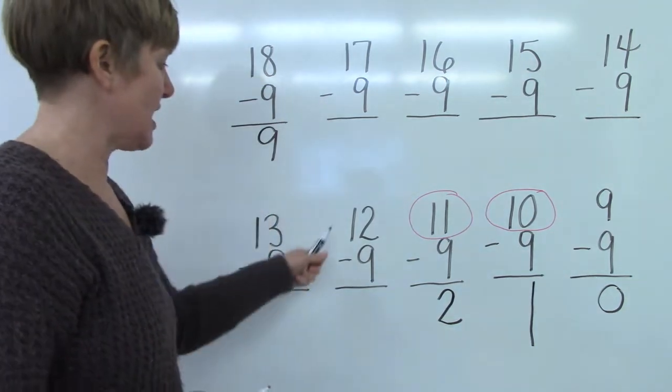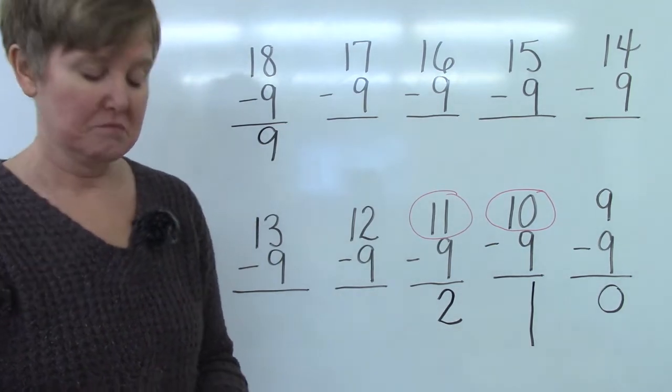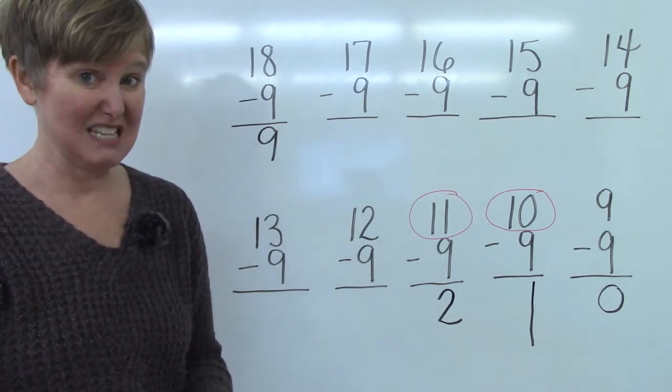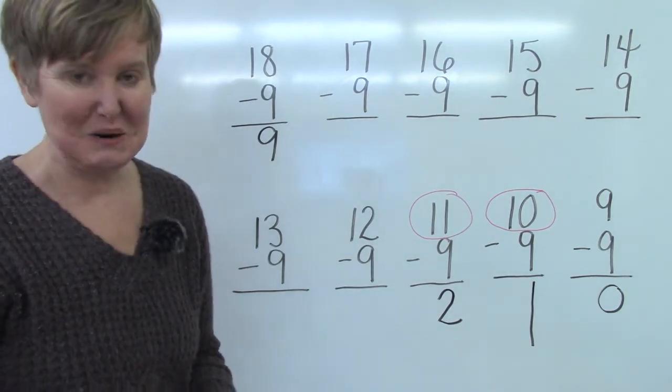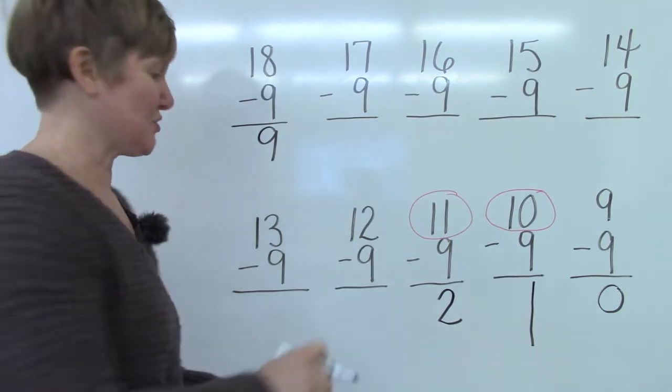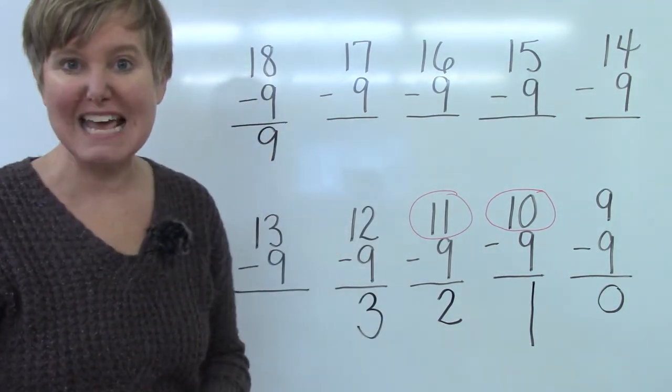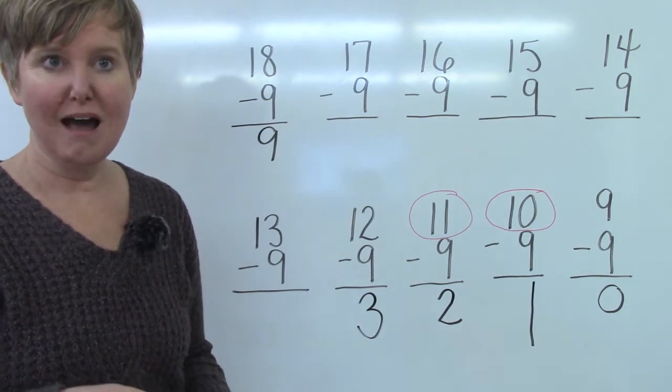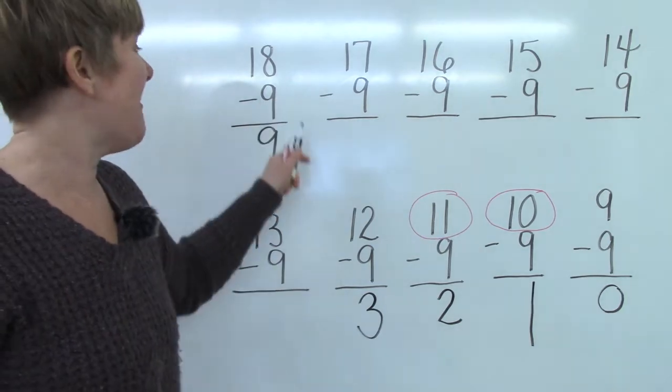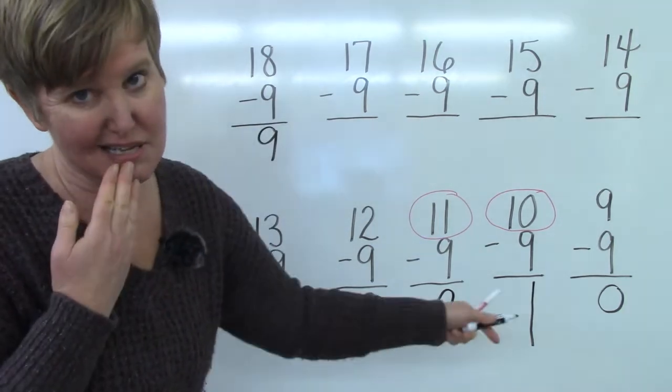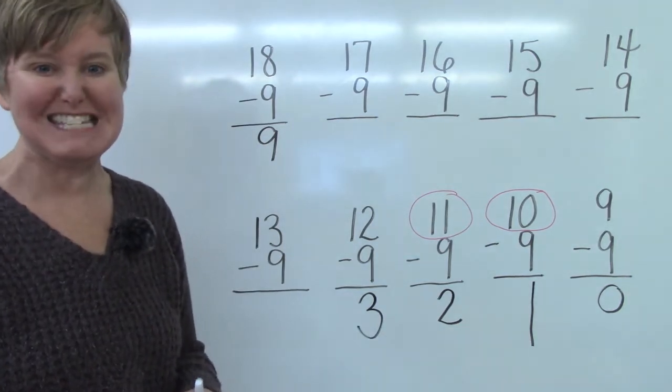Well let's try it on this one. We have twelve minus nine. There are two digits in the number twelve. A one and a two. If you add them together what's the answer? It's three isn't it? Well if we have twelve and we take nine away our answer is three. And so this trick works on all of these questions except for nine minus nine which is super super easy to remember.